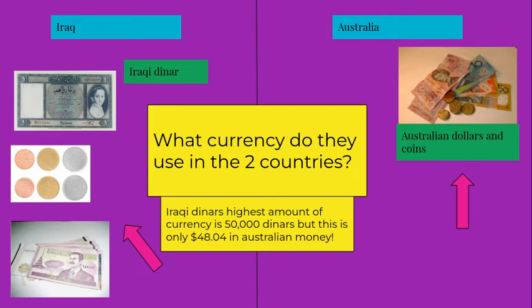The smallest amount of currency is $0.25 while ours is $0.05. But bigger it may be, the $0.25 is only worth $0.024 in Australia. I guess they have big numbers there but small worth here.